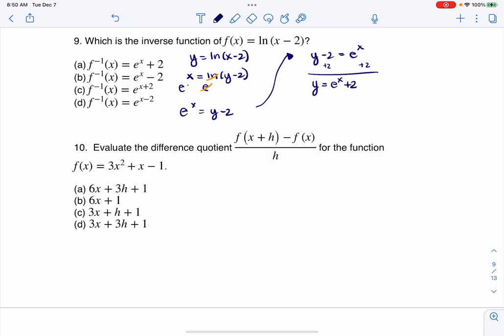I tend to like to have the variable I'm solving for on the left side of the equation. The next thing I'm going to do is add 2 to both sides. So I am looking at y = e^x + 2.